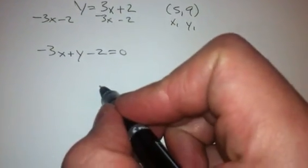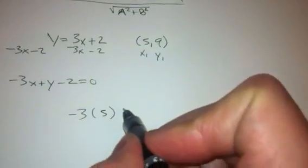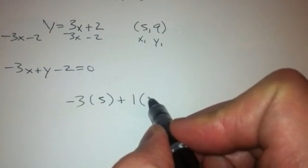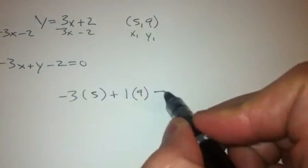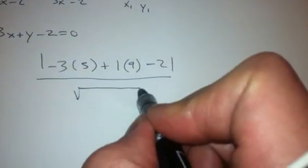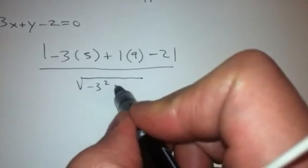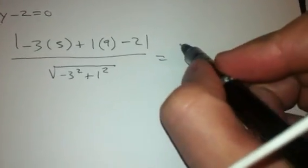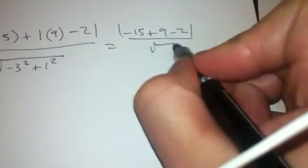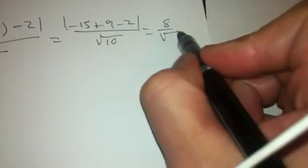Now we plug into our formula: negative 3 (which is a) times 5 (which is x₁), plus 1 times 9 (which is y₁), minus 2 (the constant). We take the absolute value of that over the square root of a squared plus b squared. Negative 3 squared plus 1 squared gives us negative 15 plus 9 minus 2, so we take the absolute value of negative 8 over the square root of 10.